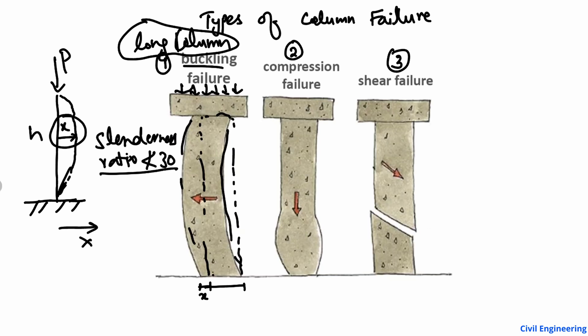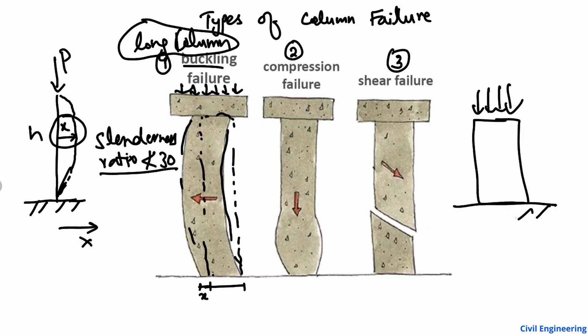Compression failure is basically the failure in which the resistance capacity of the column under compressive load is lower than the applied load. Consider another column — the height H is not too high, so we have a shorter column. When load P is applied, there is a resistance R created inside the column. As the load increases, the column shows resistance, but eventually a stage is reached where P becomes greater than R.